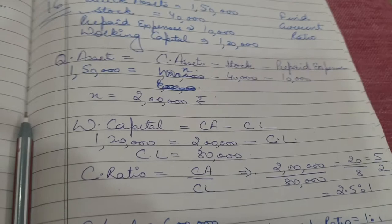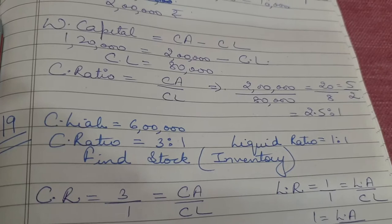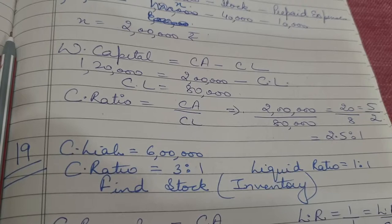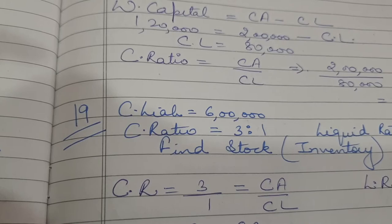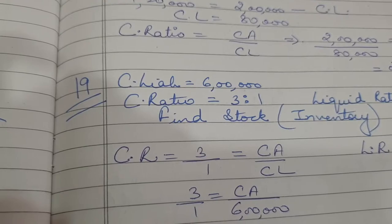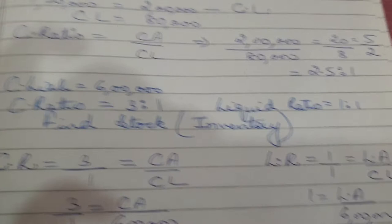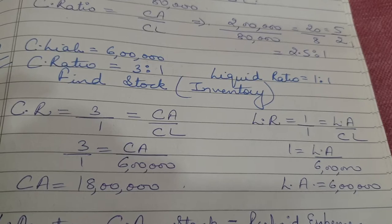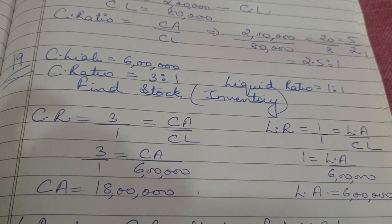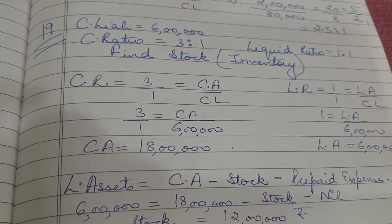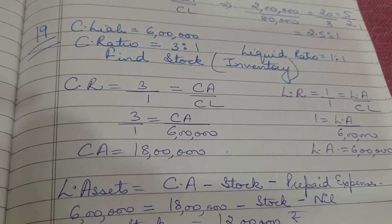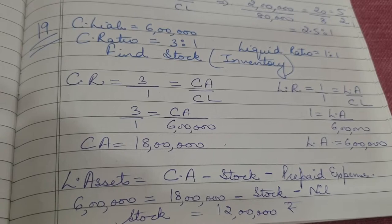Question number 19: current liabilities are Rs. 6,00,000, current ratio is 3:1, and liquid ratio is 1:1. Find the stock. Using current ratio: 3 = CA / 6,00,000, so CA = Rs. 18,00,000. Using liquid ratio: 1 = liquid assets / 6,00,000, so liquid assets = Rs. 6,00,000. Using the quick assets formula: liquid assets = current assets − stock − prepaid expenses. Since prepaid is not given, it is taken as nil. So 6,00,000 = 18,00,000 − stock, giving stock = Rs. 12,00,000. Thank you friends.